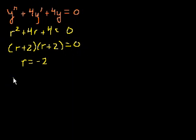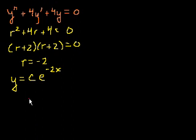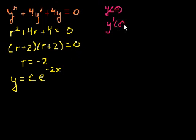You might say that's fine — maybe the general solution is just y equals some constant times e to the minus 2x, using that one solution. And my reply is: this is a solution, but it's not the general solution. Why? Because this is a second order differential equation, and to find a particular solution someone would have to give you two initial conditions — for example, what y(0) equals and what y'(0) equals.